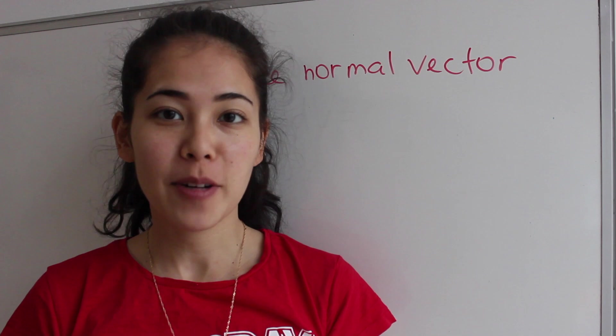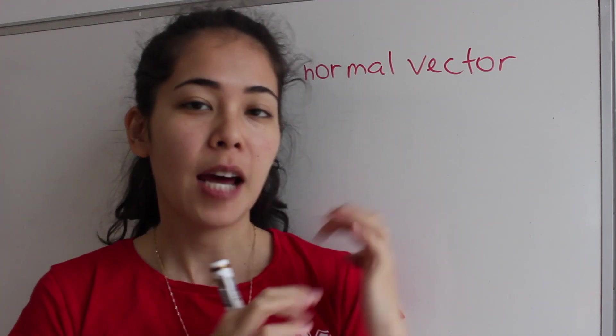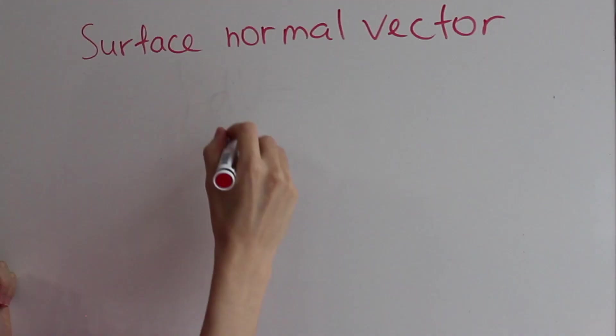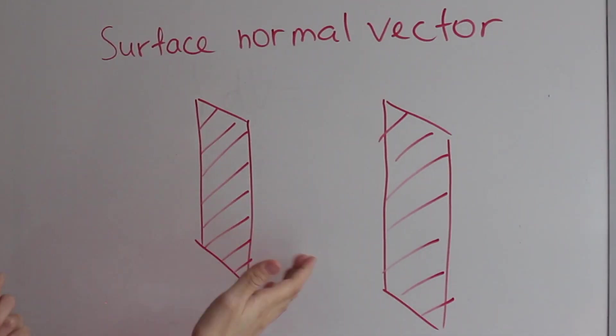All right, so remember we had our control volume and two sides of it, but I'm going to draw only two sides. So these are the two sides of our control volume and I'm not connecting them as a box because we will be focusing on the normal vector. So we will focus on surfaces of the control volume through which the air passes.